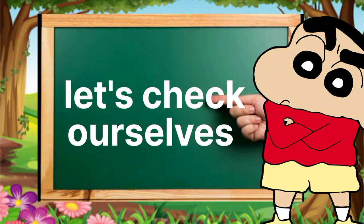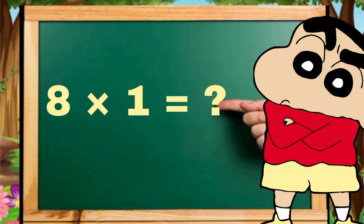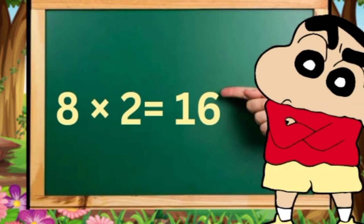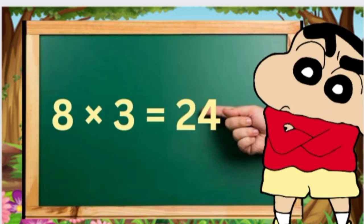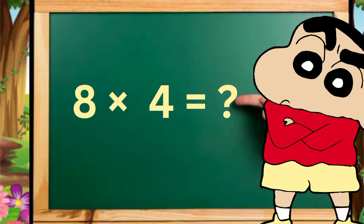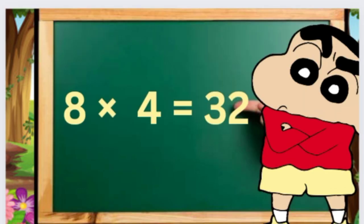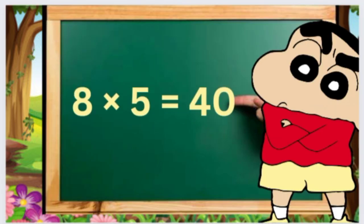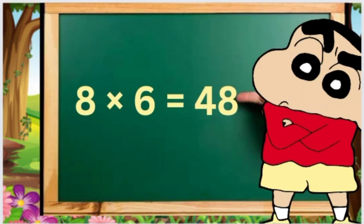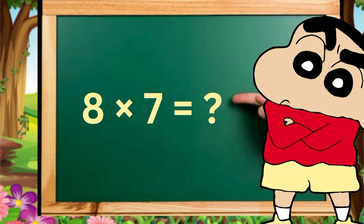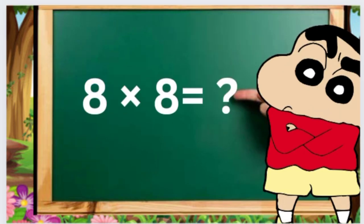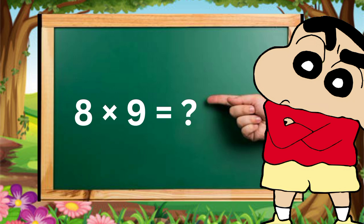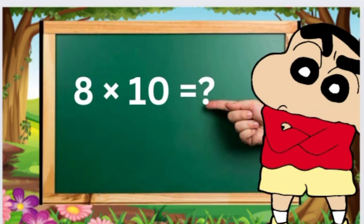Let's check ourselves. Eight, one's eight. Eight, two's sixteen. Eight, three's twenty-four. Eight, four's thirty-two. Eight, five's forty. Eight, six's forty-eight. Eight, seven's fifty-six. Eight, eight's sixty-four. Eight, nine's seventy-two. Eight, ten's eighty.